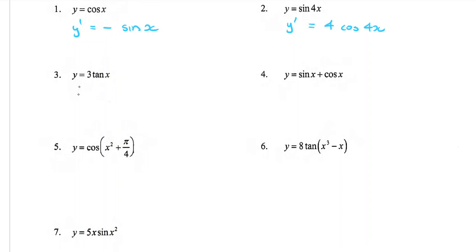Question 3: differentiate 3 tan x. The 3 is a spectator just sitting out front, so it stays there. Differentiating tan becomes sec squared of my function, which was x, and the derivative of x is 1. Question 4: two terms, do them one at a time. For sine x: derivative of my function is 1, sine changes to cos of x. For cos x: derivative is 1 but cos differentiates to negative sine of x.